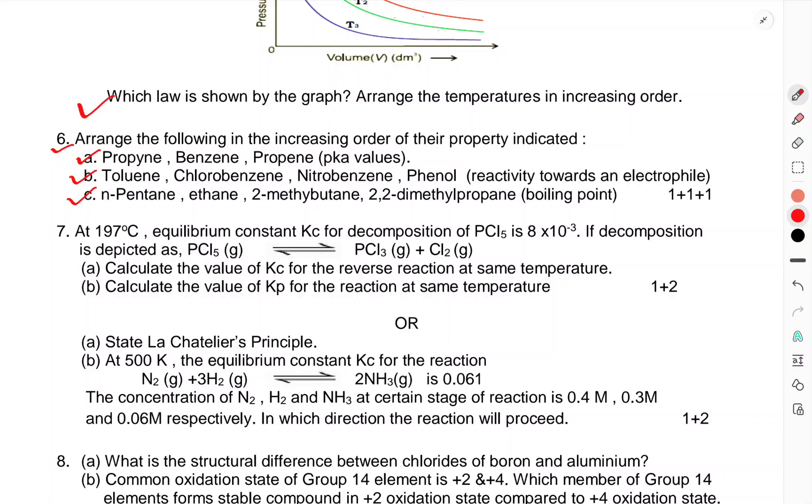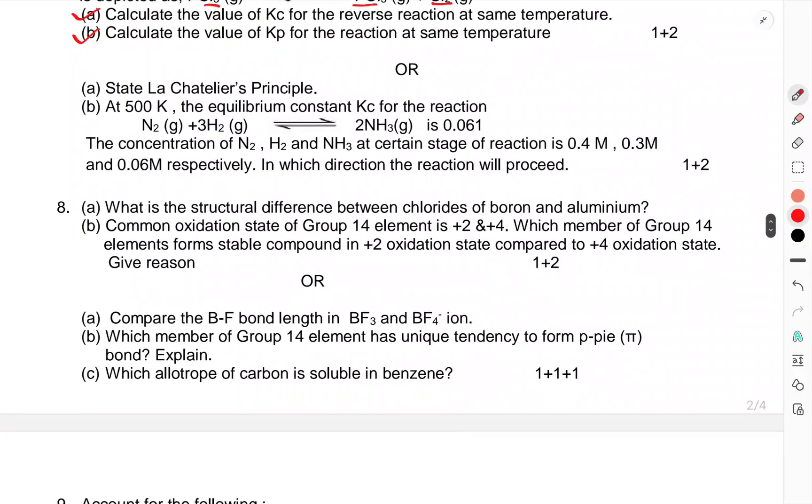At 197 degrees Celsius, equilibrium constant Kc for decomposition of PCl5 is 8×10^-3. The decomposition is depicted by PCl5(g) ⇌ PCl3 + Cl2. Calculate the value of Kc for the reverse reaction at the same temperature. Calculate the value of Kp for the reverse reaction at the same temperature. OR: